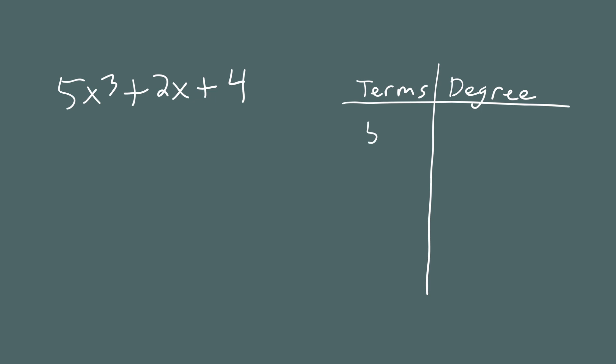The three terms in this polynomial are 5x cubed, 2x, and 4. Remember, each one of these terms is called a monomial. The degree of each term is the exponent of the variable. So for 5x cubed, the exponent is 3, so the degree of this term is 3. For 2x, we don't write the exponent because it's 1 — there are a few rules in algebra like this where sometimes you write the exponent and sometimes you don't. Once you get the hang of them, it'll just come second nature.